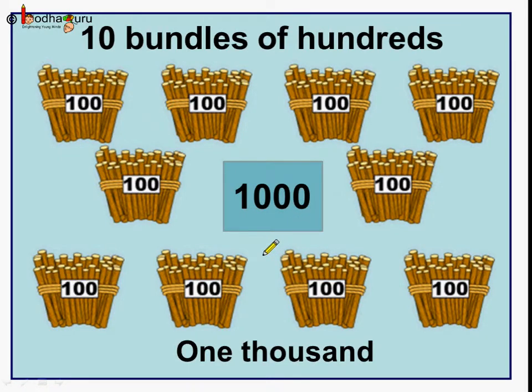So 1000 has 4 digits. Understood? 1000 means 1, 0, 0, 0. So any number 1000 and above is written with at least 4 digits.